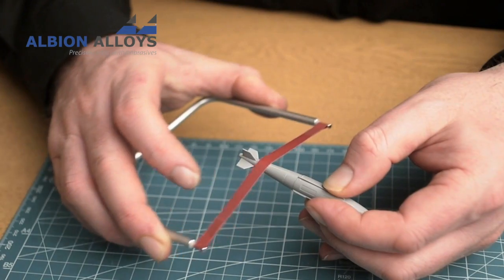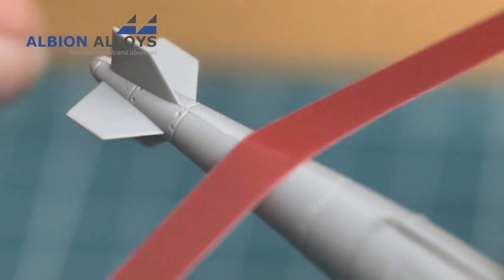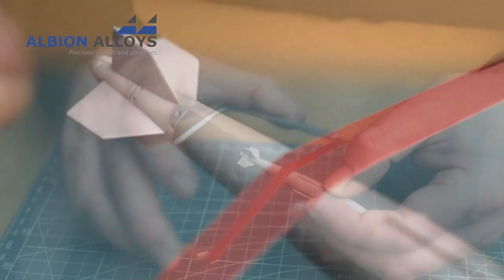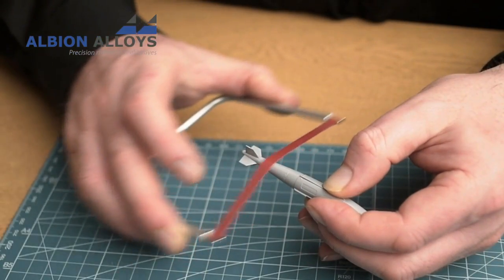By gripping the handle, you're releasing the tension on the grit tape, enabling you to sand compound curves without creating a flat spot.